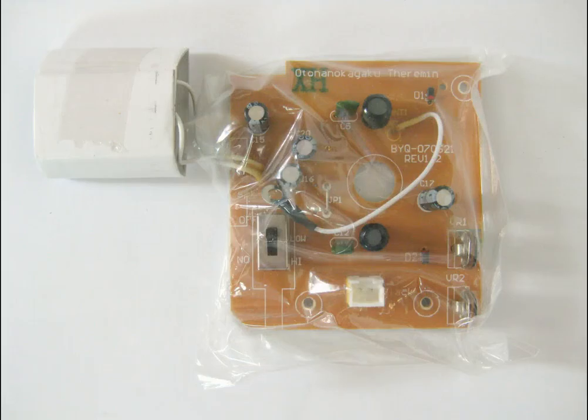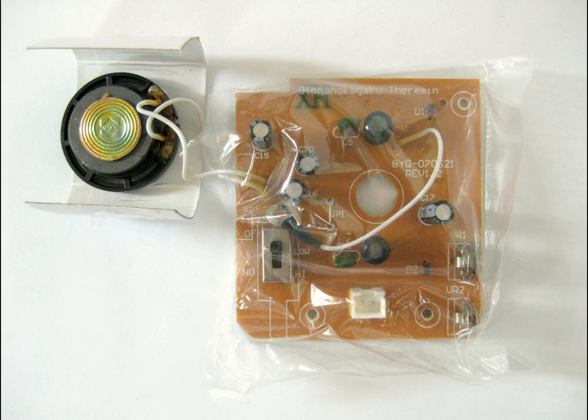If you are using a screwdriver that is not magnetized, you can magnetize it using the speaker. This will make it easier to hold screws in place with the screwdriver. To do this, remove the circuit board and speaker from the theremin kit. This is what they look like. Be careful with the speaker wires so that they do not break or come loose, and do not let the speaker dangle if possible. Carefully unwrap the speaker as shown here.